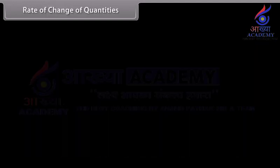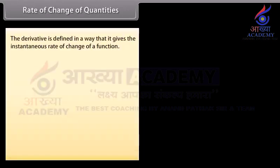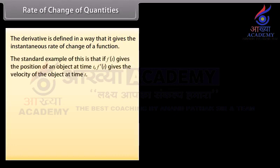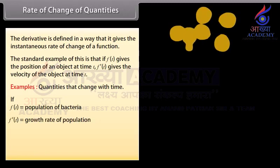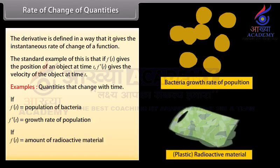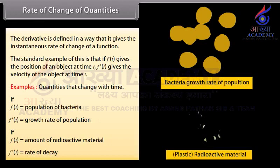Rate of change of quantities. The derivative is defined in a way that it gives the instantaneous rate of change of a function. The standard example is that f of t gives the position of an object at time t, and f dash of t gives the velocity of the object at time t. For example, if f of t is equal to population of bacteria, then f dash of t is equal to growth rate of population. If f of t is equal to amount of radioactive material, then f dash of t is equal to rate of decay.